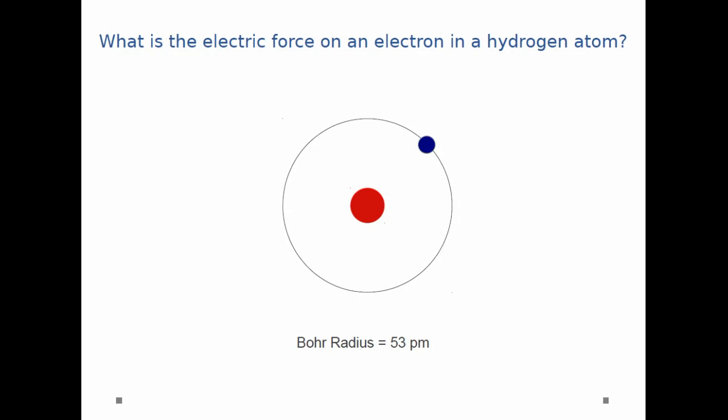Now, in order to solve this problem, you need to know what distance separates the proton and the electron. And so I give you the Bohr radius of the hydrogen atom. That's 53 picometers. The Bohr radius is just the average distance between the proton and electron.